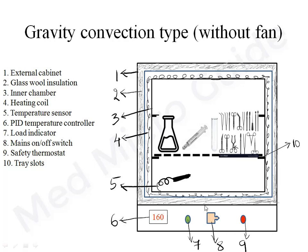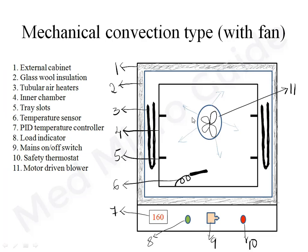The control panel shows an LED display indicating chamber temperature, or a knob for adjusting temperature to desired levels. There is also a load indicator, safety thermostat, and a main on/off switch. In the mechanical convection type, the rear end is fitted with a fan. Next to the thick outer chamber is glass wool insulation, and between that and the inner chamber is an air space where tubular air heaters are placed. These heaters warm the air, which is blown around the load by motor-driven blowers. A sensor inside controls the temperature.